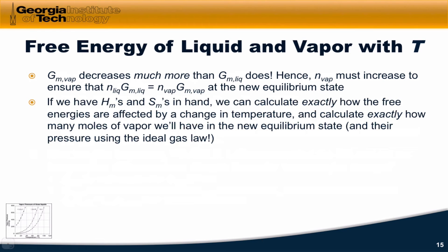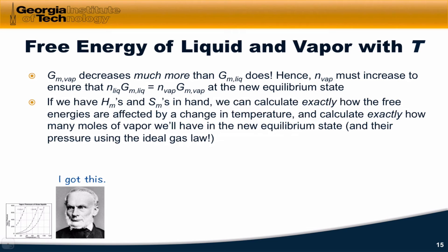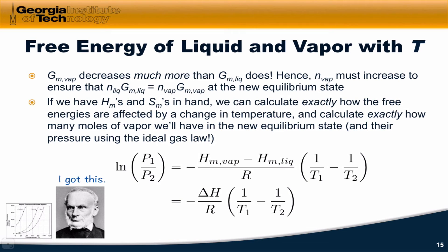If we have these molar enthalpies and molar entropies in hand, we can actually calculate exactly how the free energies are affected by a change in temperature and calculate exactly how many moles of vapor will form as a result of an increase in temperature. The resulting pressure can be calculated from this number of moles using the ideal gas law. This was done by Clausius, and the resulting equation that shows how the vapor pressure changes with temperature is known as the Clausius-Clapeyron equation.